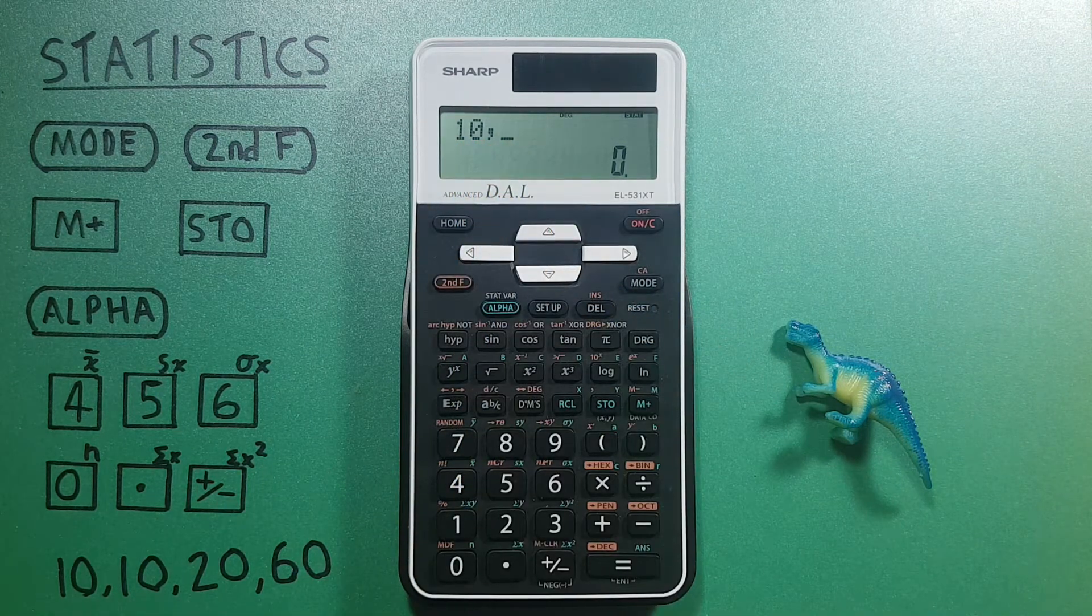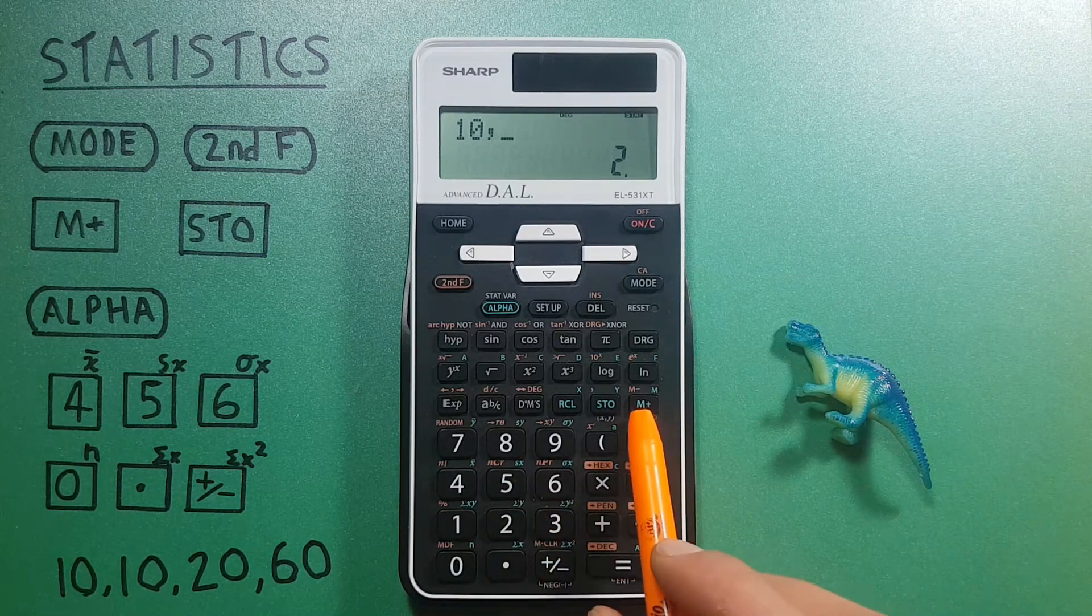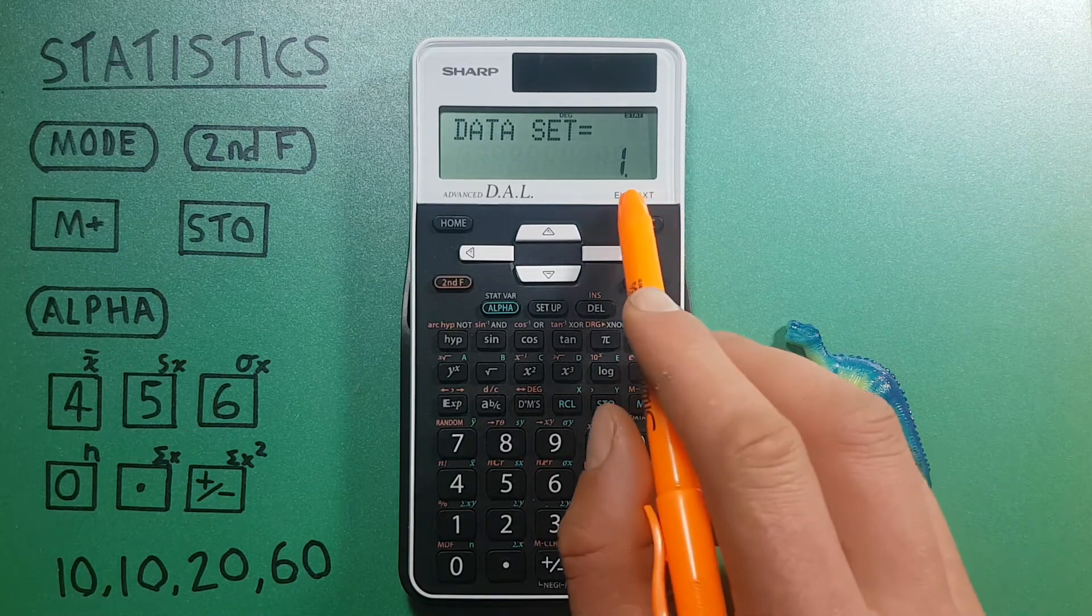This is asking our frequency. We can now press two since it occurs twice, and then the M plus key to enter our data into the data set. There we go.